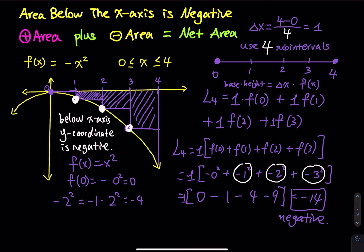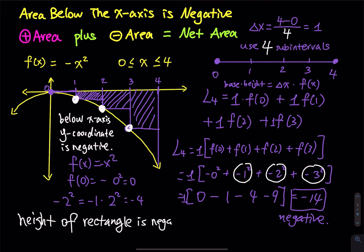The height of the rectangle is negative. I know that sounds ridiculous, but in this problem, when you determine the height of a rectangle, the height is negative because the height is the y-value, and the y-value is below the x-axis. You can say the y-coordinate is below the x-axis, so the y-value is negative.